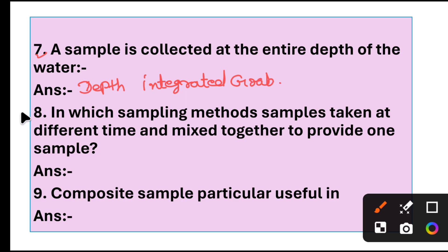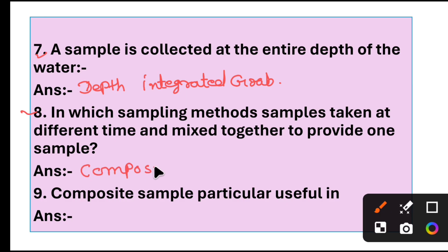Question 8: In which sampling method are samples taken at different times and mixed together to provide one sample? Answer: Composite sampling method. In composite sampling, samples taken at different times are mixed together to provide one sample.